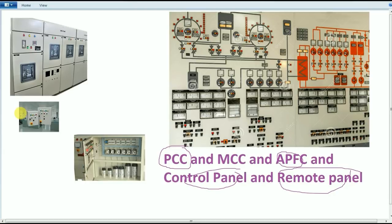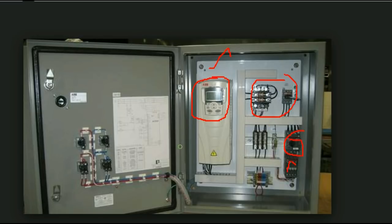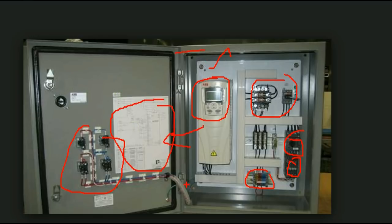PCC is Power Control Center, MCC is Motor Control Center, APFC is Automatic Power Factor Control, and then there are Control Panel and Remote Panel. We will also add the VFD panel. This is the VFD — it has all fuse units, MPCB contacts, terminal block, and Post Potential. This is the control center panel. It will open and close — that is the right thing. So this is the VFD panel.